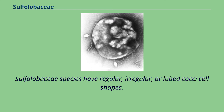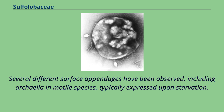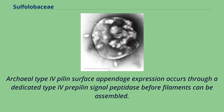Sulpholobaceae species have regular, irregular, or lobed cocci cell shapes, with size falling between 0.5 and 2 micrometers in diameter. Several different surface appendages have been observed, including archaella in motile species, typically expressed upon starvation. Unique to Sulpholobus acidocaldarius are the archaeal adhesive pili, which are important for surface attachment and biofilm formation. Archaeal type 4 pilin surface appendage expression occurs through a dedicated type 4 pre-pilin signal peptidase before filaments can be assembled.